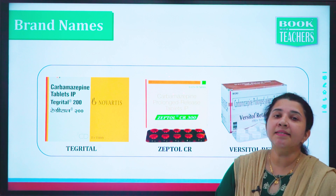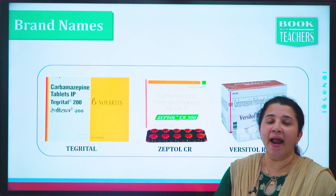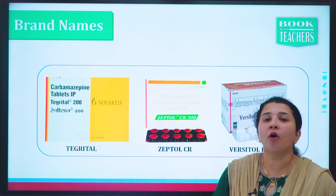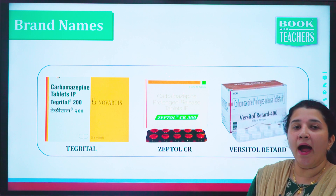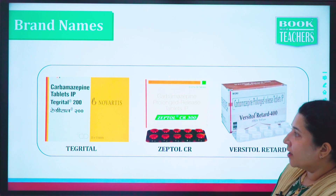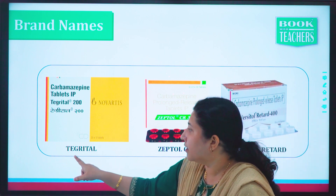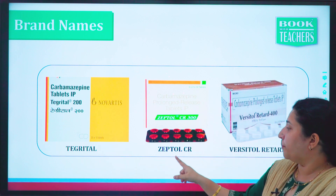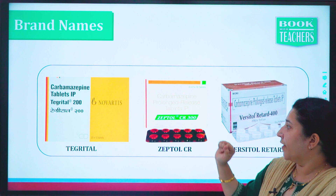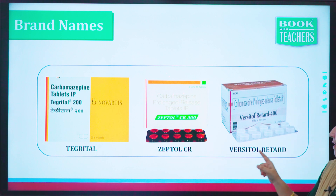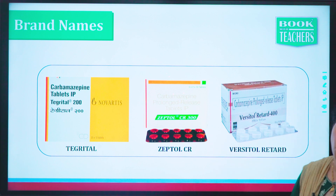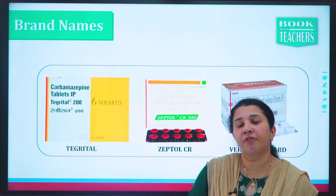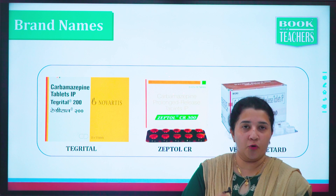Now let's see what are the different brands available in the market which are prescribed by doctors for treatment of epilepsy. The first one is Tegretol 200. Next one is Zeptol CR 300. And Vericetol Retard 400. So they are available in the market in different strengths — that is 200, 300, and 400.